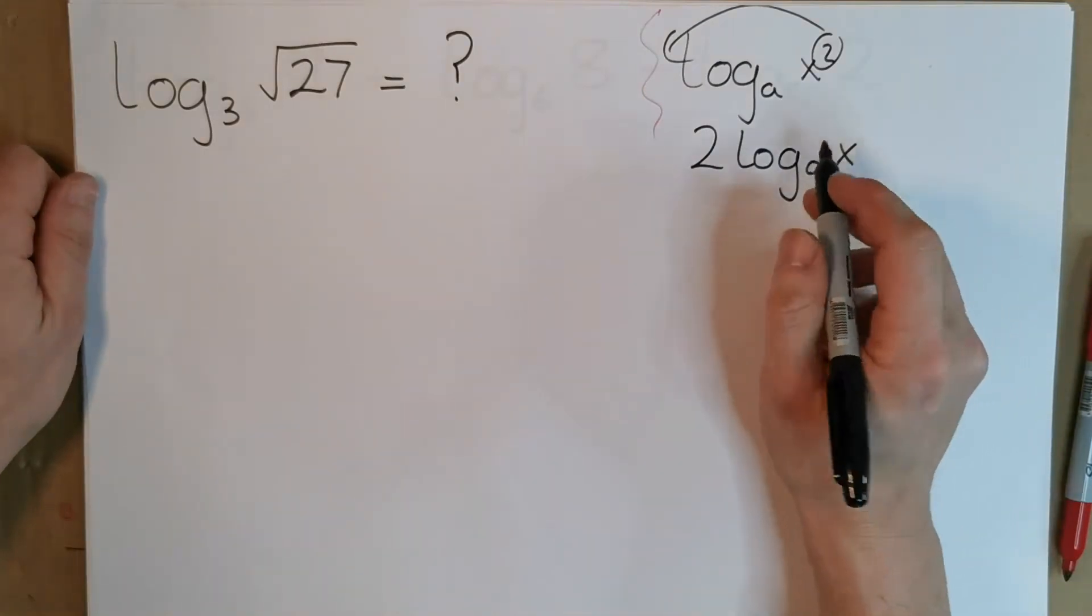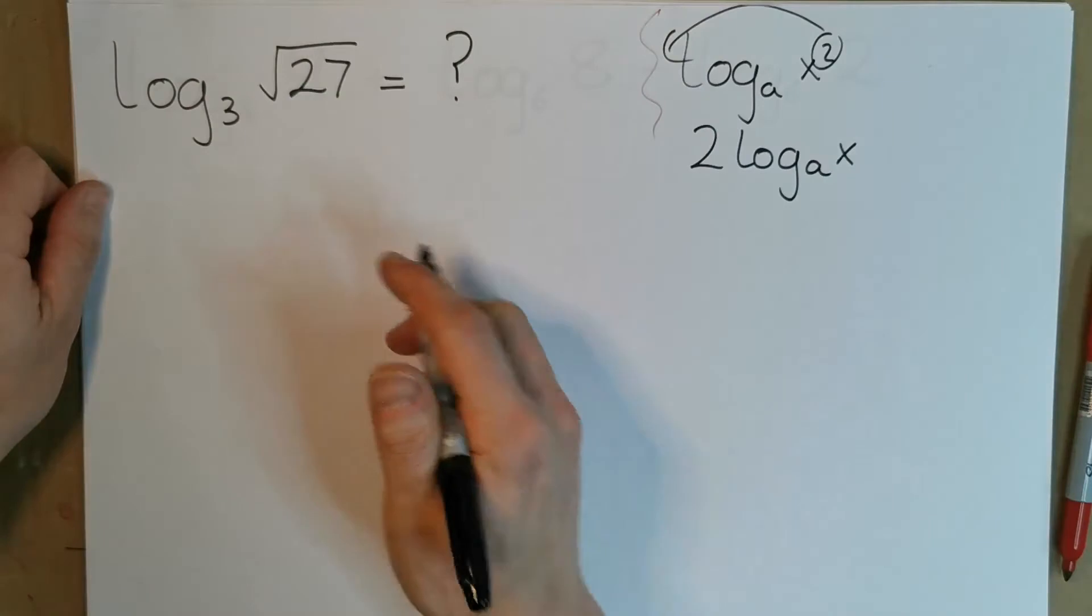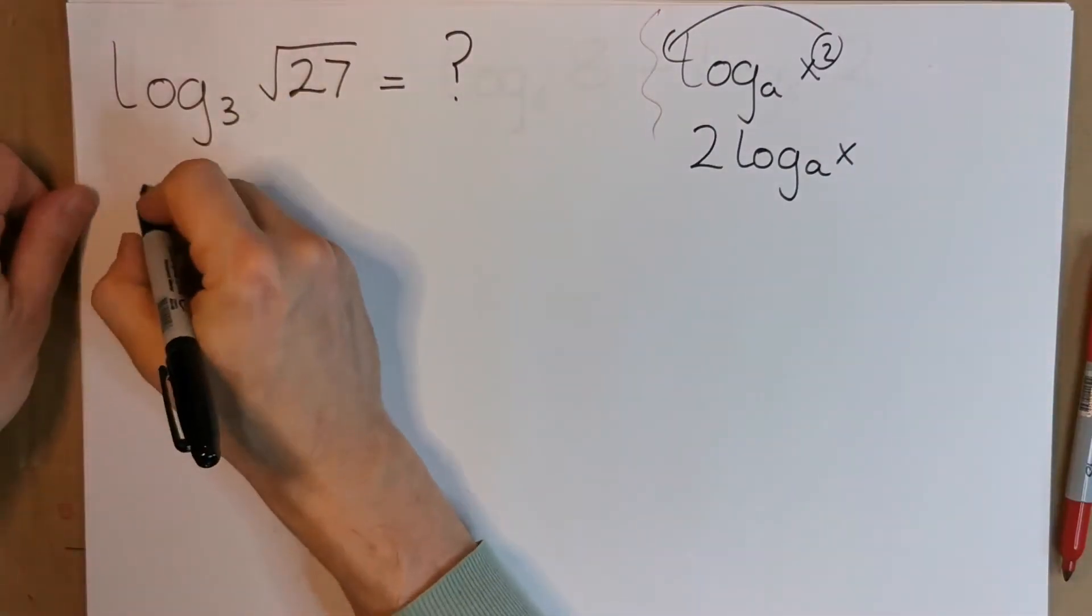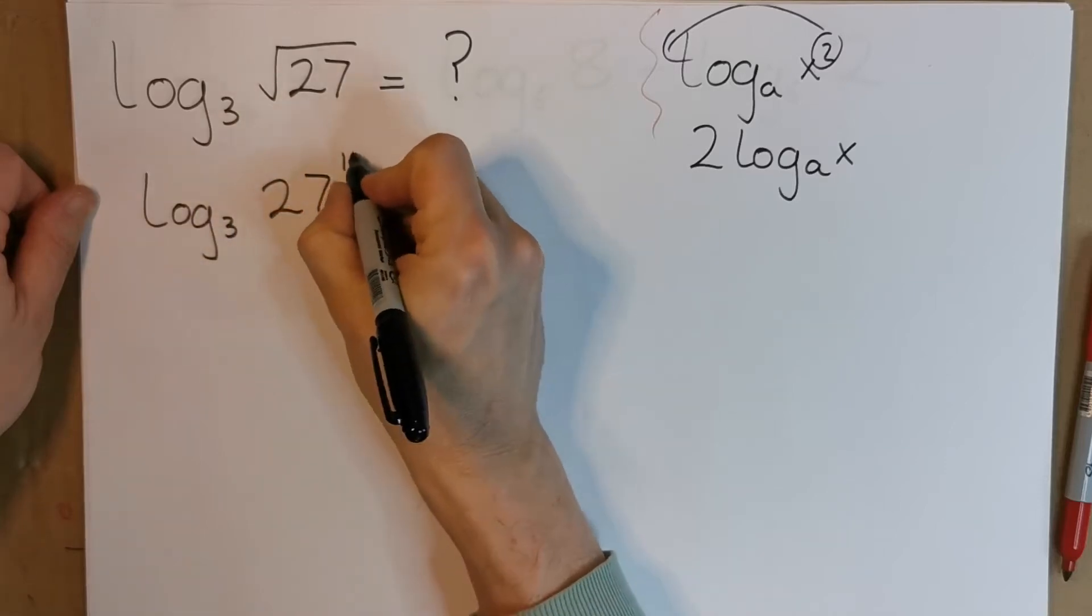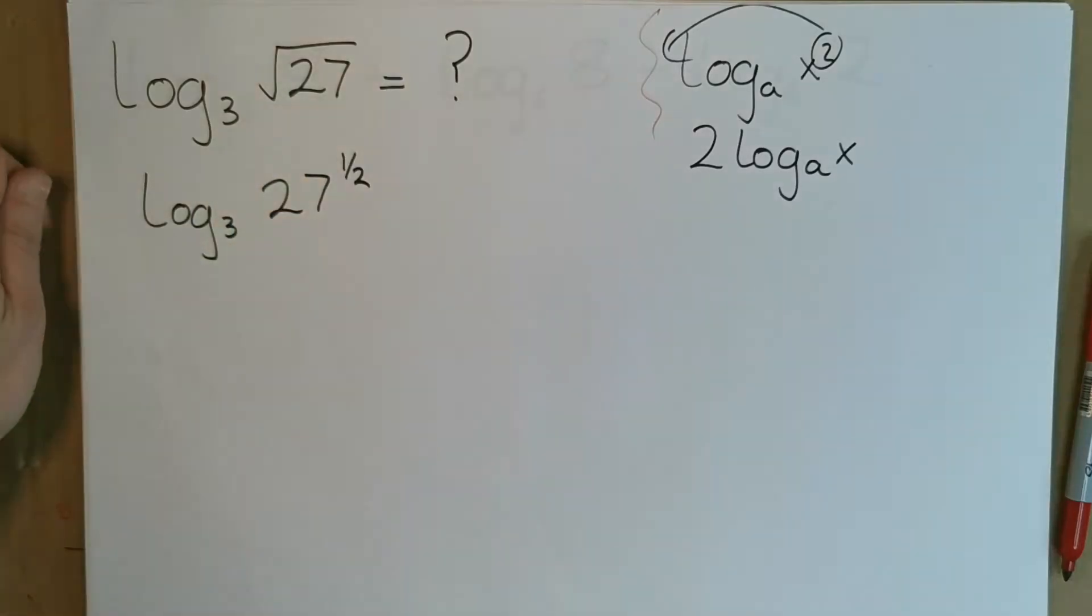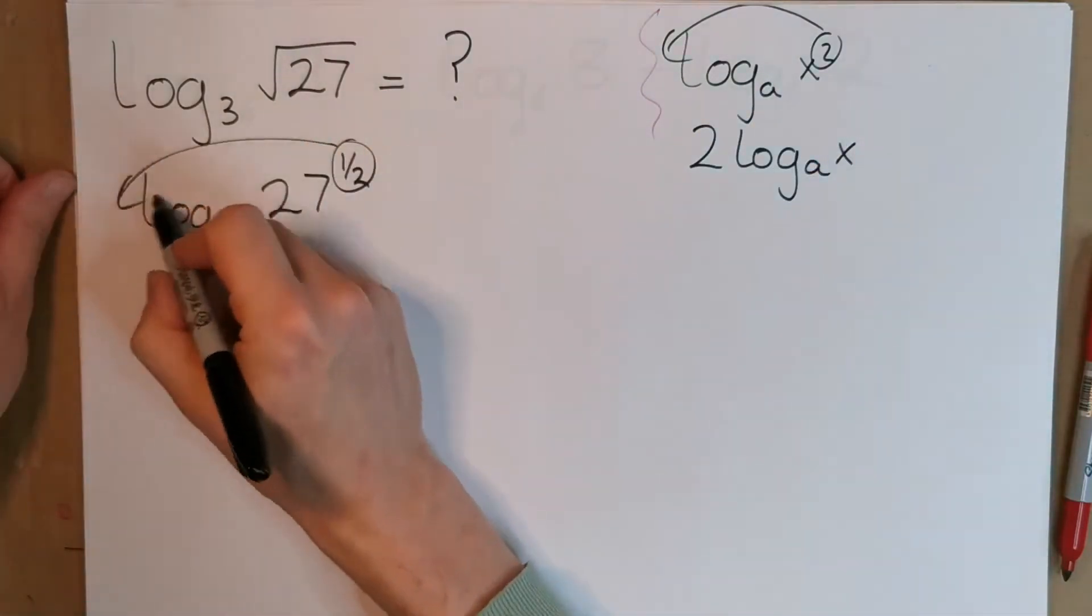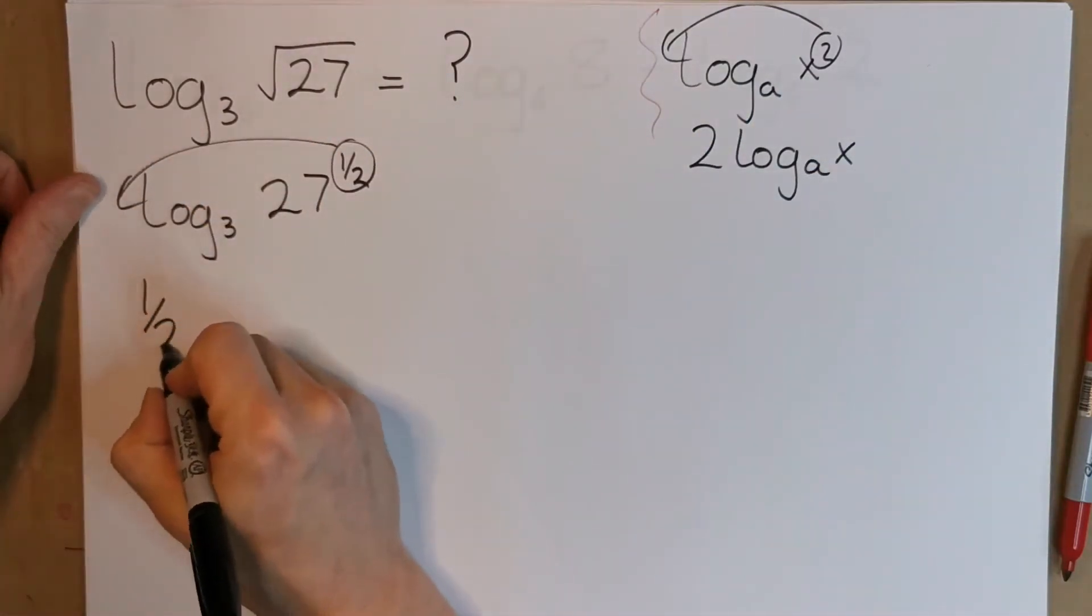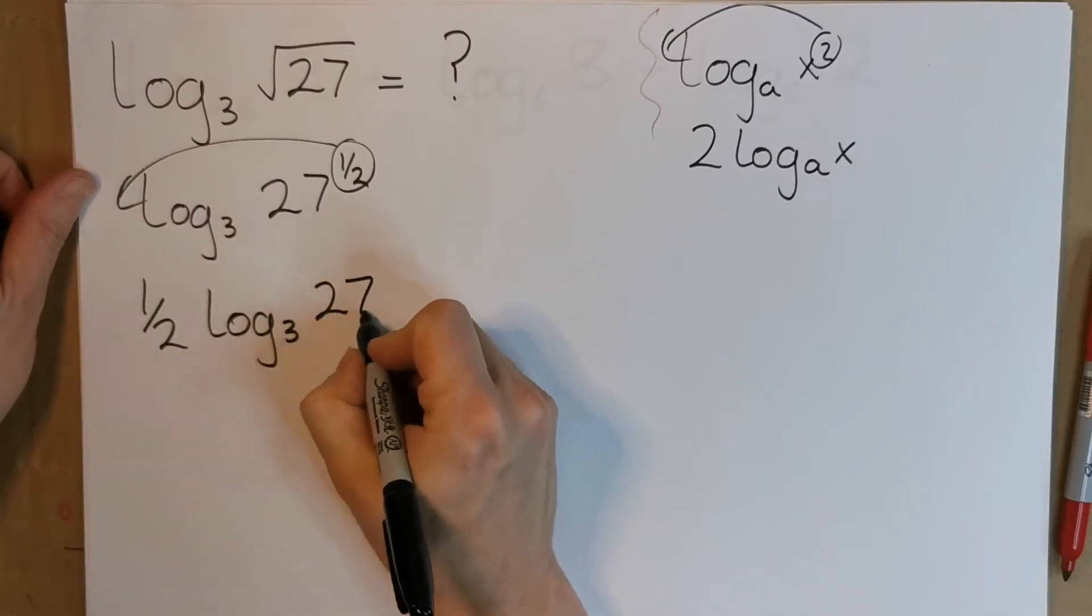It can make the problem a bit easier, and in general that's what you have to do when you have a power. So let's change the look of this: log base 3 of 27 to the power of a half, that's what a square root is. From this rule we know we can bring this half power down in front, so we can say a half of the log base 3 of 27.